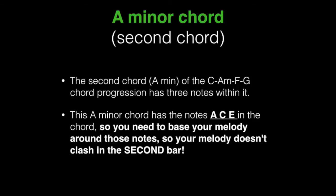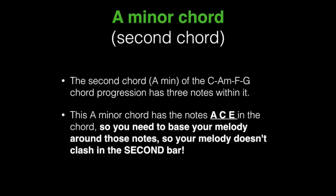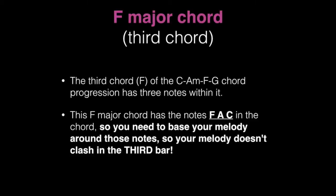Our second chord is an A minor chord and this chord has the notes A, C, and E, so you need to base your melody around A, C, and E in the second bar. Our third chord is an F major chord which has the notes F, A, and C, so you need to base your melody around these notes in the third bar.